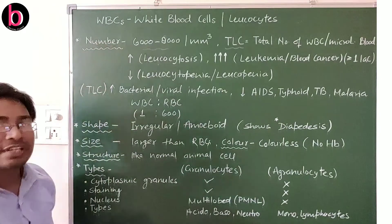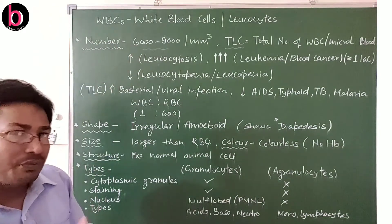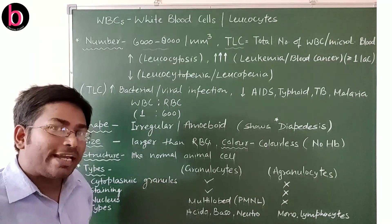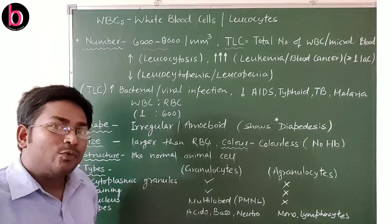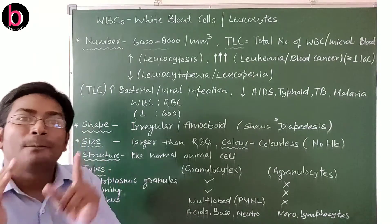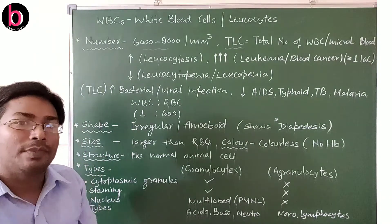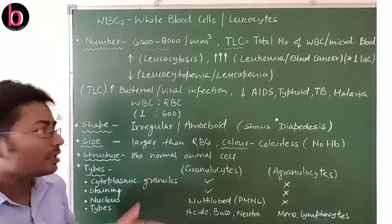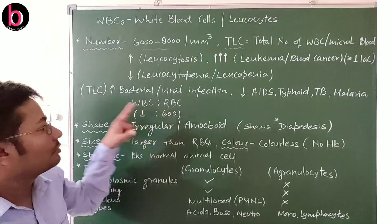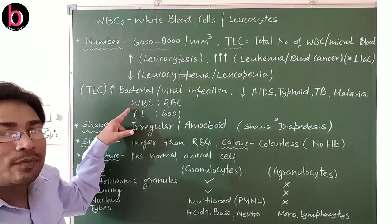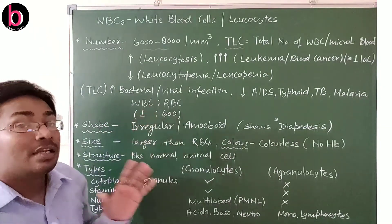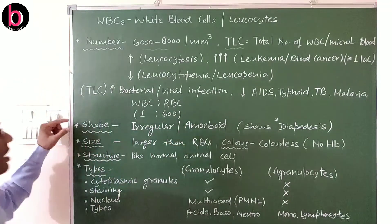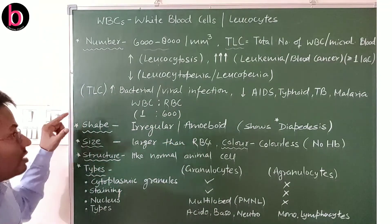When we compare the number of WBCs with respect to RBCs — we earlier discussed that the number of RBCs or erythrocytes is 5 to 5.5 million per cubic millimeter in blood, while WBCs are 6000 to 8000 per cubic millimeter. So when we compare, for every one WBC there are 600 RBCs in our blood.